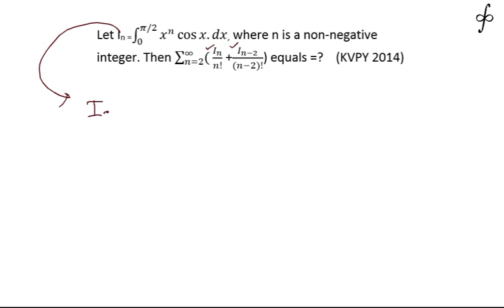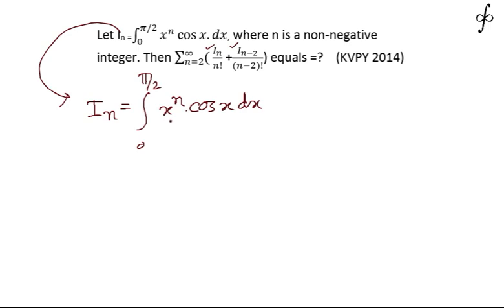According to the given data, I_n is equal to the integral from 0 to π/2 of x to the power n times cos x dx. To apply integration by parts, we take x to the power n as the first function and cos x as the second function, according to the ILATE rule.